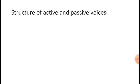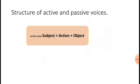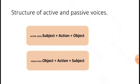Let me show you the structure of active and passive voice together. The structure of active voice is: Subject + Action + Object, where action means verb. The structure of passive voice is the complete vice versa: Object + Action + Subject. Remember this structure and you will be able to answer any question on active and passive voice.